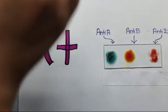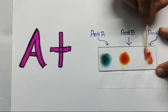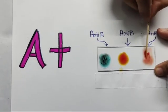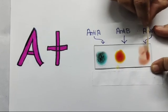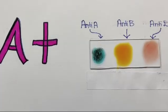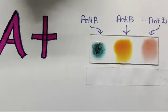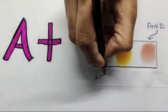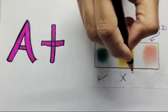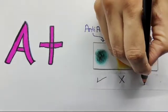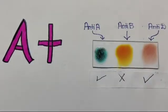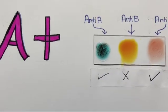Secondly, clotting is seen in anti-D. That means Rh antigen is also present. Hence, it is positive. So, the overall blood group is A positive.